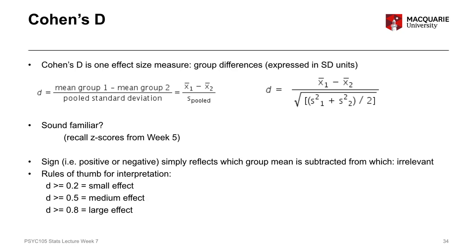We have some rules of thumb for interpreting Cohen's D, though these should be taken with a grain of salt and used to guide interpretation rather than be the definitive answer. Generally, a value less than 0.2 is negligible; between 0.2 and 0.5 is a small effect; between 0.5 and 0.8 is a medium effect; and greater than 0.8 is a large effect. Remember, the unit of measurement is standard deviation units.